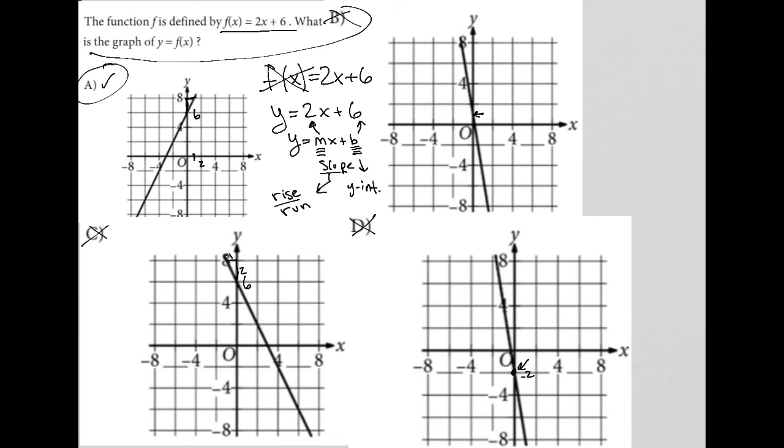So choice A is the correct answer. Why? Because its y-intercept, its b value, is 6 like the question mentioned. And its slope, its m value, its rise over run, is positive 2 like the question mentioned. So choice A is the correct answer here.